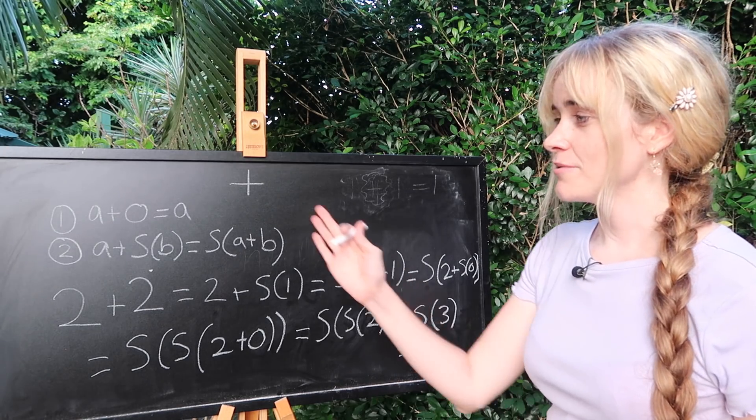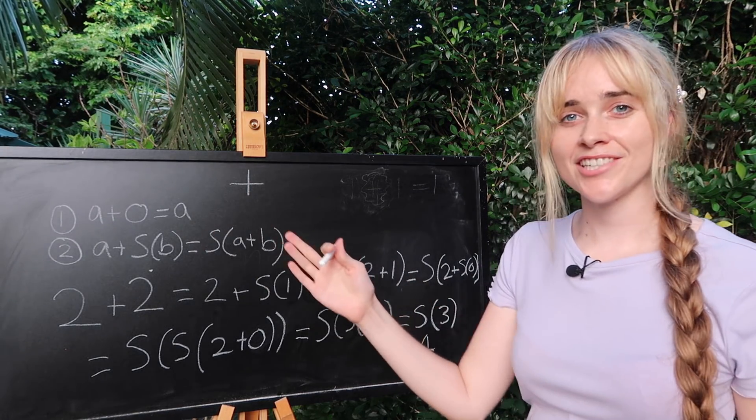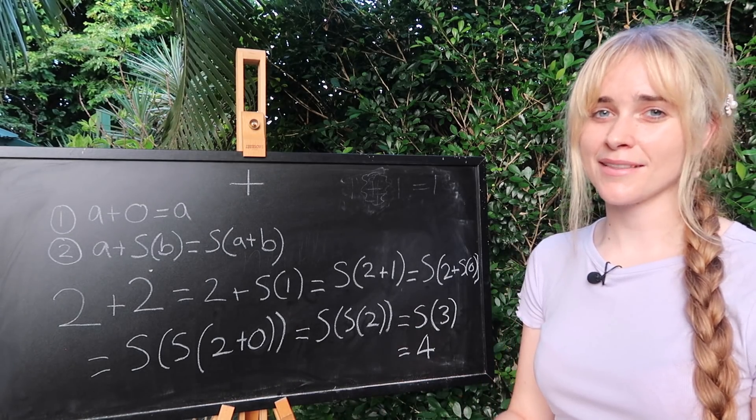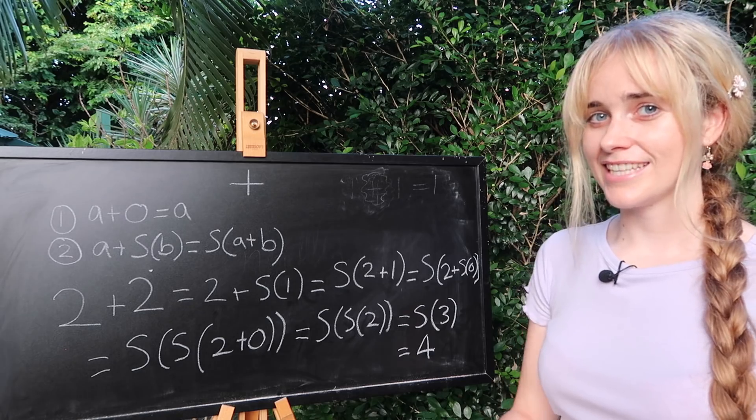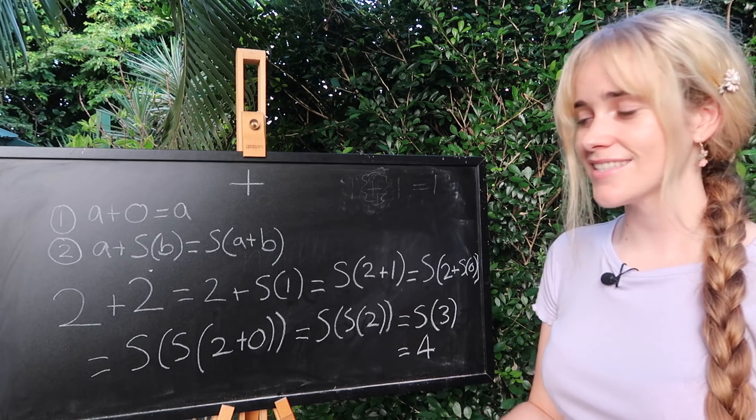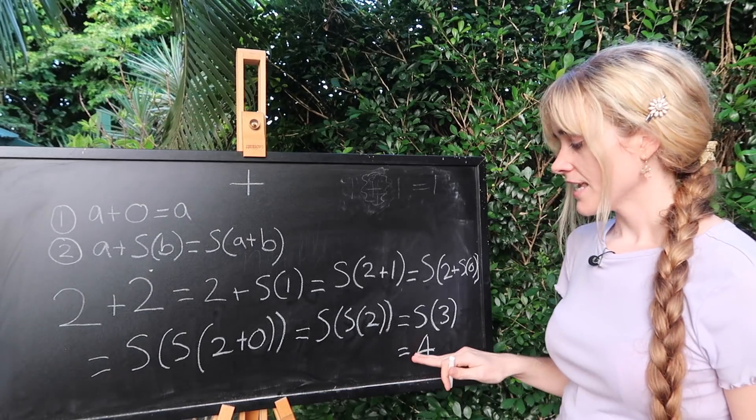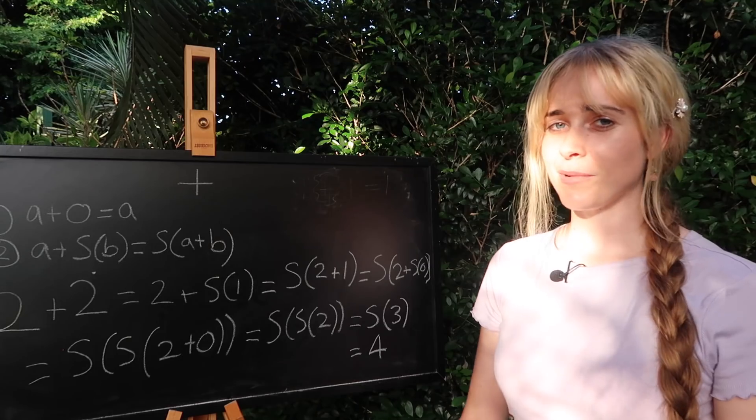So there we go. By using our definition of addition and also our way to construct the natural numbers and thinking about what a number actually is in terms of successors, we've managed to show that two plus two is indeed equal to four.